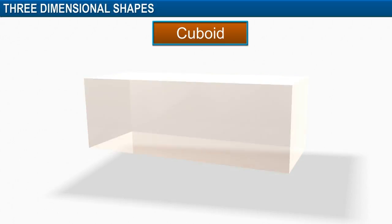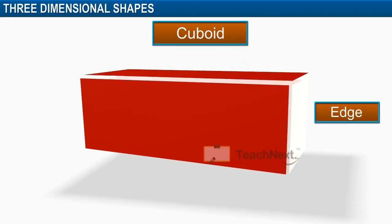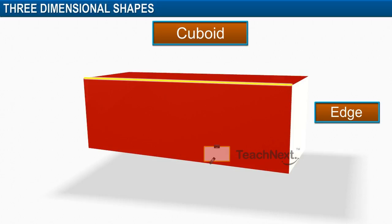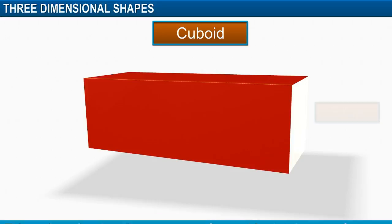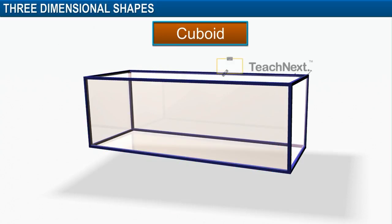Two faces join to form the edge of the cuboid. An edge can be defined as a line segment formed by joining two faces of a solid shape. A cuboid has 12 edges.